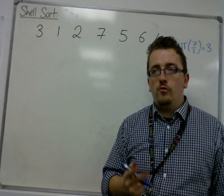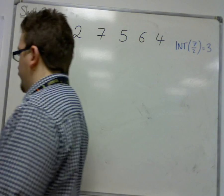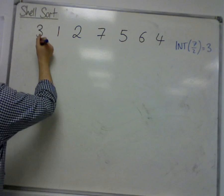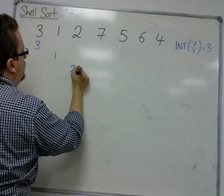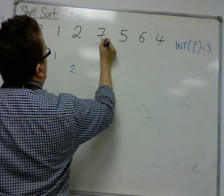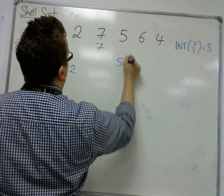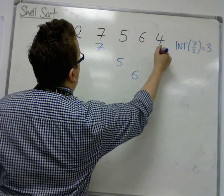So we're going to split it into 3 sublists. So we've got 3, 1, 2, then 7, 5, 6, and then 4.